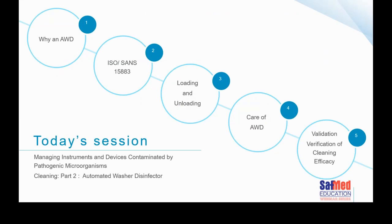What have we covered in today's session? Why use an automated washer disinfector? You get a disinfection rinse, consistency, reliability, and reproducibility. You get the ability to validate and verify that your instruments have been cleaned. It makes them so much safer to handle for the individual who's about to pack them. All automated washer disinfectors — please make sure you're purchasing one manufactured according to the standard. Make sure you look after them properly, load and unload them correctly, maintain and manage them correctly. And at the end of the day, validate and verify that your cleaning was effective. Thank you.